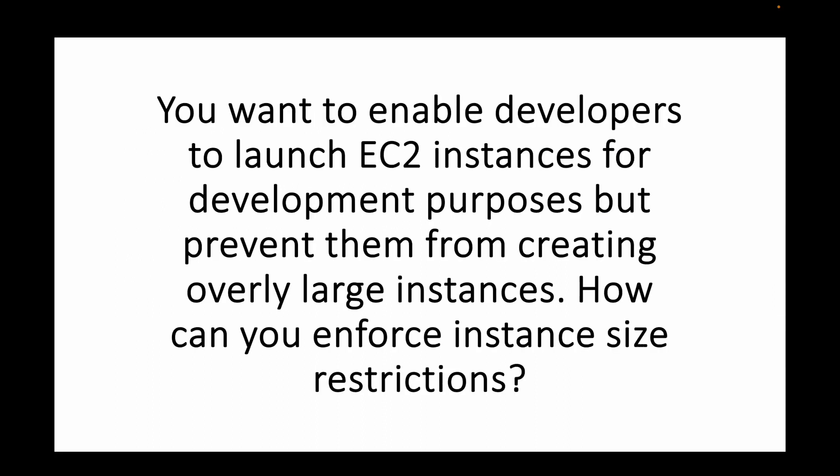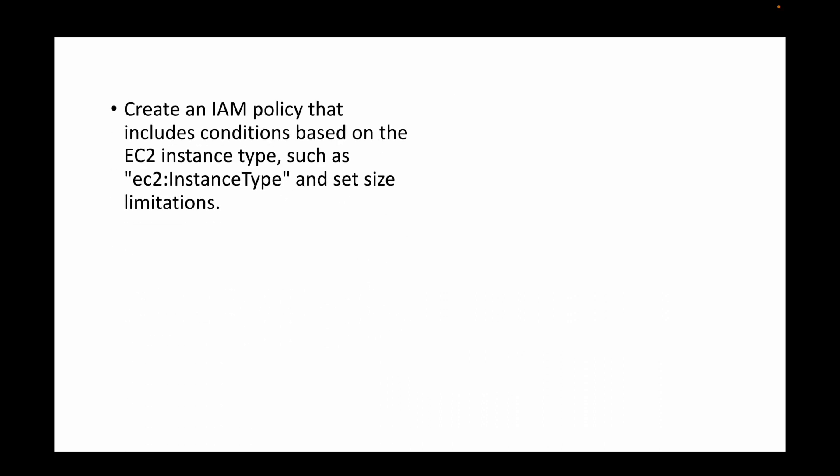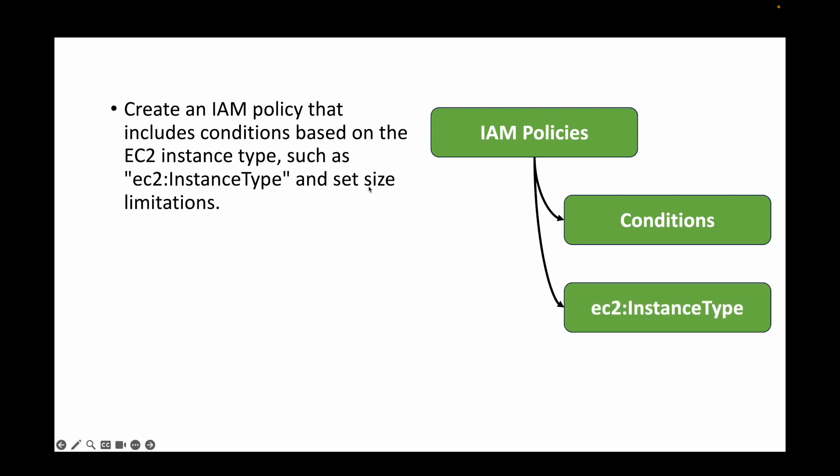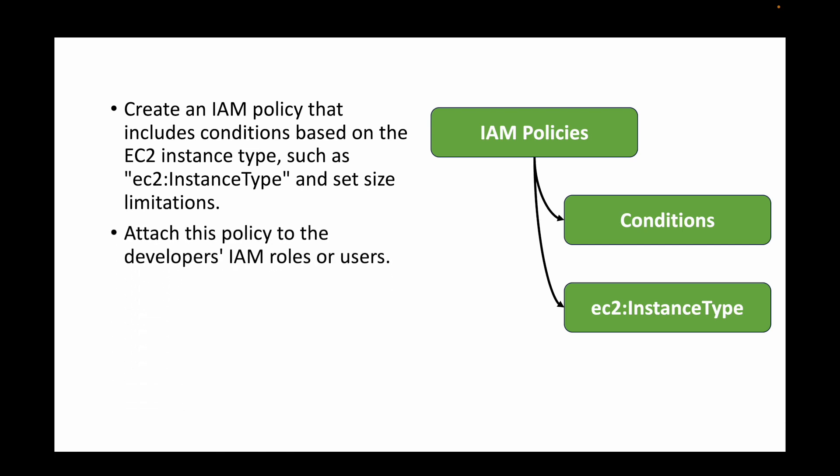The next question is: you want to enable developers to launch EC2 instances for development purposes but prevent them from creating overly large instances. How can you enforce instance size restrictions? You want developers to be able to launch EC2 instances but restrict them to a specific instance type, such as t2.medium. For this, we create an IAM policy with a condition based on the instance type — ec2:InstanceType — setting the size limitation, and attach it to the user or role account.